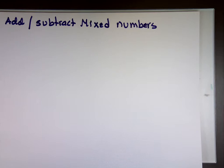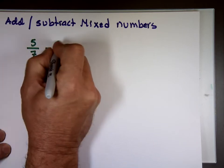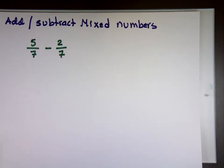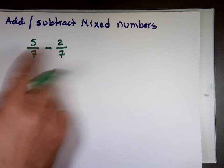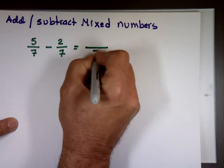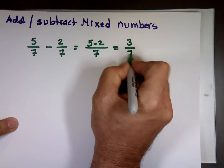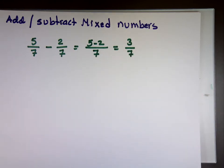Before we add and subtract mixed numbers, let's review a simple example. If I have 5/7 minus 2/7, the key to adding and subtracting fractions is to make sure the bottom number — the denominator — is the same. It is the same here, so you leave it alone. 5 minus 2 is 3, so the answer is 3/7. Simplify your answer if you can.